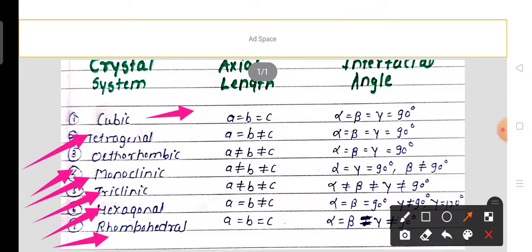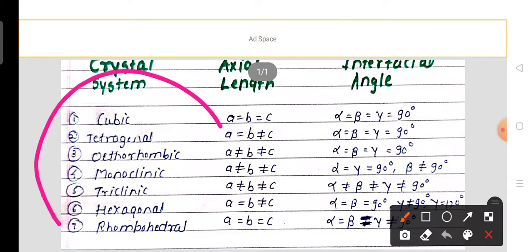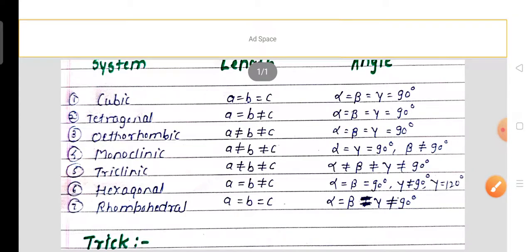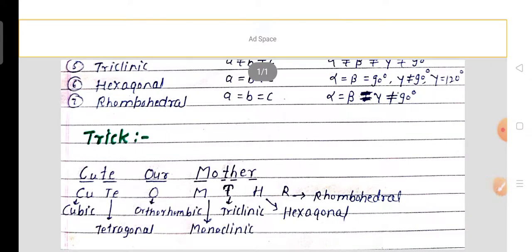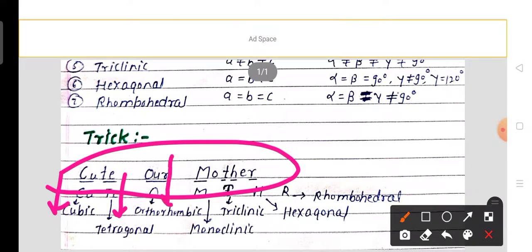From an exam point of view, we have to remember the axial length and interfacial angle for each of the seven crystal systems. We can remember them easily using the trick 'cute our mother': Q for cubic, T for tetragonal, O for orthorhombic, M for monoclinic, T for triclinic, H for hexagonal, and R for rhombohedral.